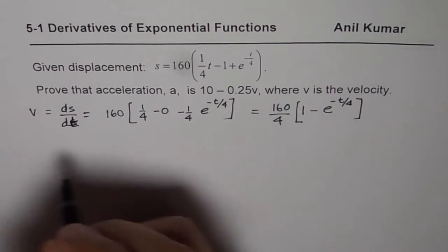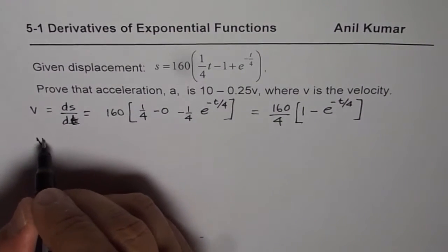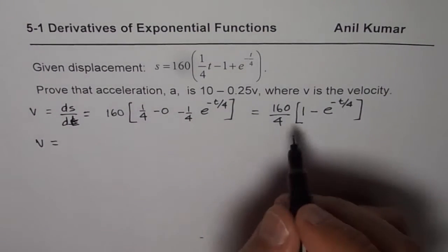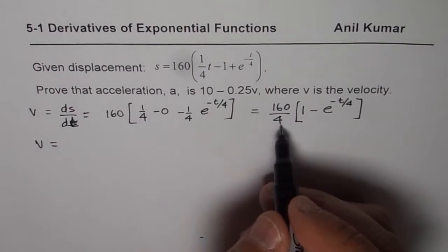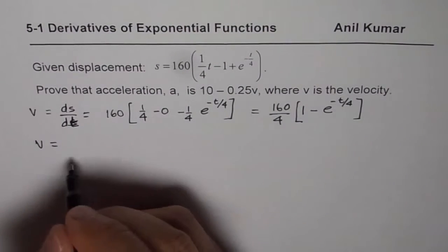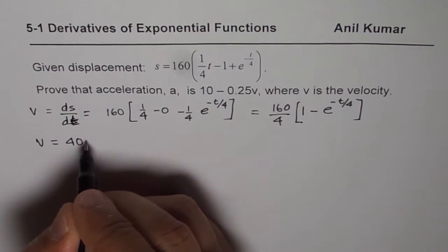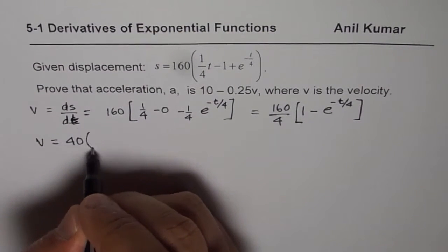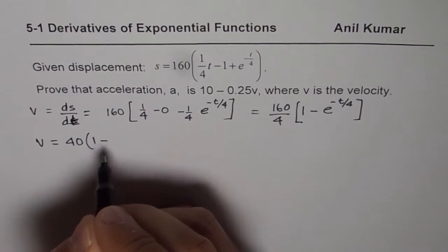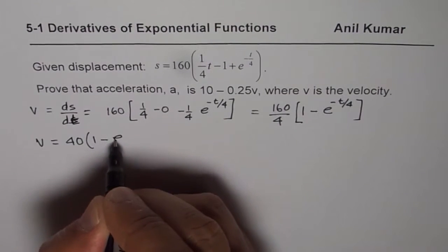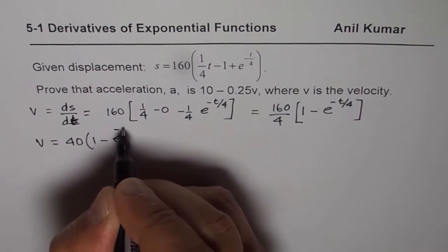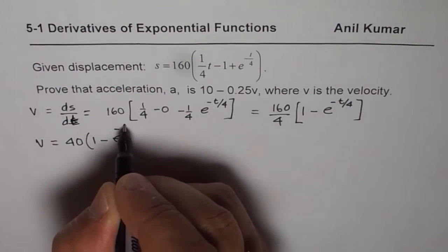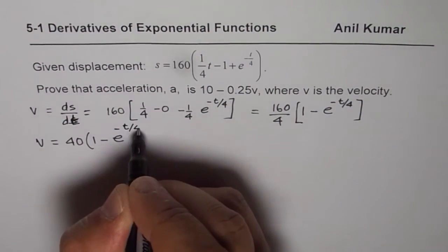So we have v equal to 40 — since 160 divided by 4 is 40 — giving v equals 40 times (1 minus e to the power of minus t over 4).